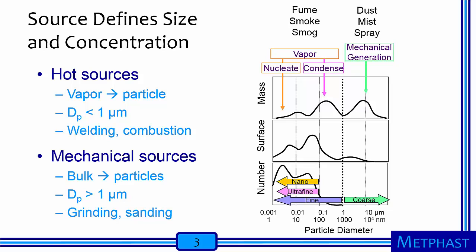In contrast, mechanical sources break up bulk material into coarse particles that are primarily larger than one micrometer, such as in grinding or sanding. These aerosols we know as mists, dusts, and sprays. They often dominate particle mass distributions but contribute little to particle number concentration.